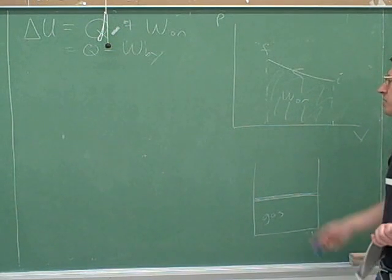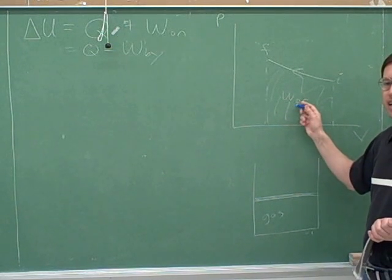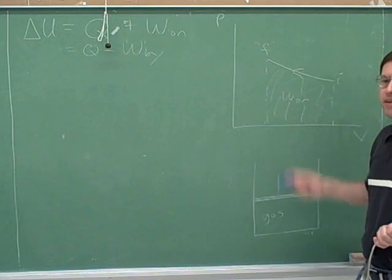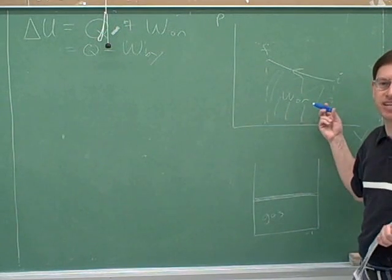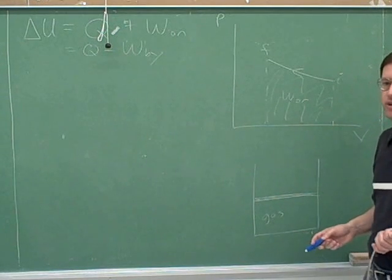Or if you wanted to, again, you could say this is the work done by the gas, except if this area is, say, 10, you'd have to say the work done by the gas is negative 10. And again, oftentimes that's actually what physicists do. They like to use this negative approach.